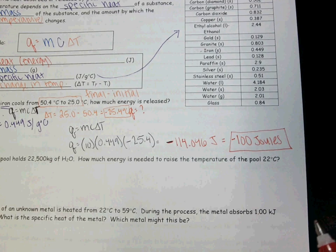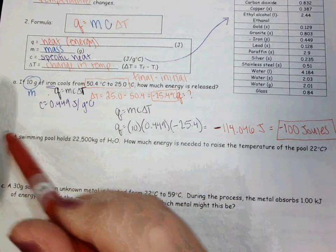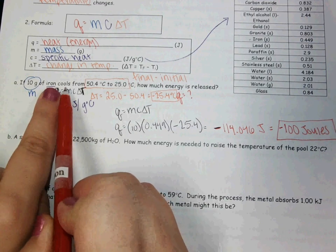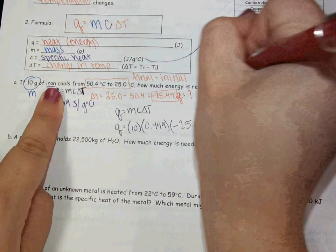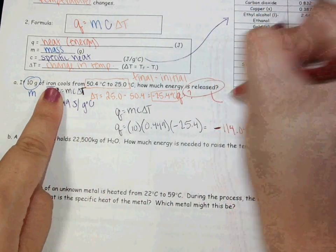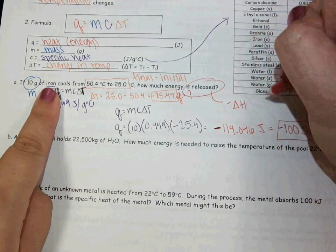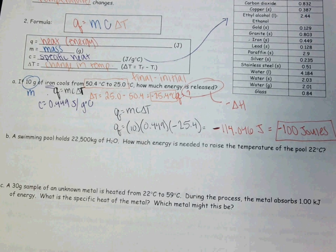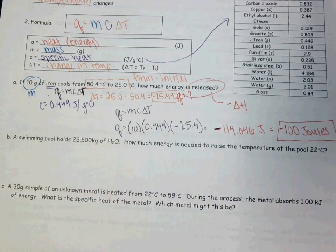The fact that it's negative tracks with the way that the question is worded, because iron is cooling — so it is releasing energy. If energy is released, that tells me that I have a negative delta H value. It also tells you that your temperature change is negative. So those two things are going hand in hand.